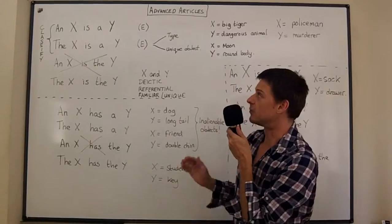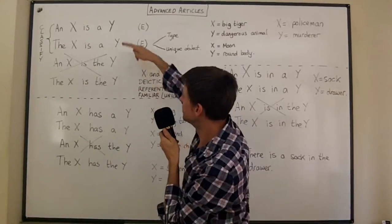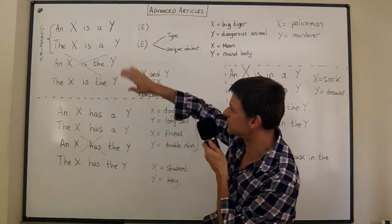Today we're going to go into detail with articles. I want to look at 12 different sentences for here which is just X is Y with different articles.